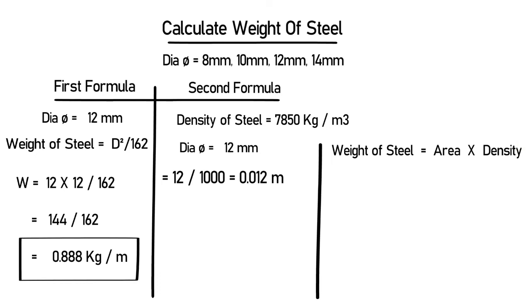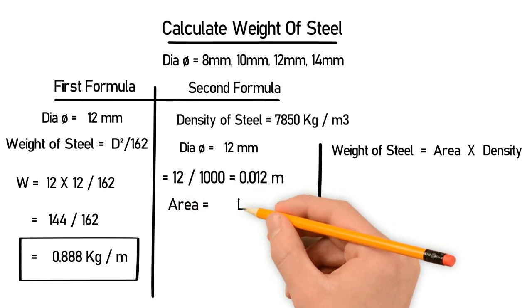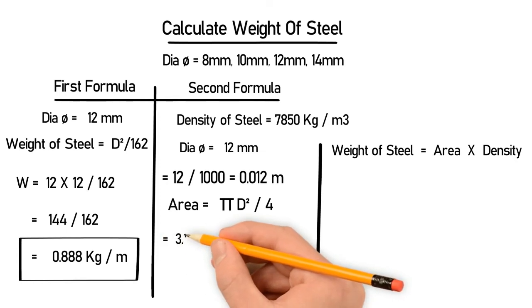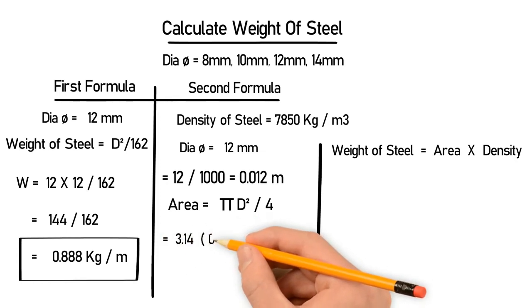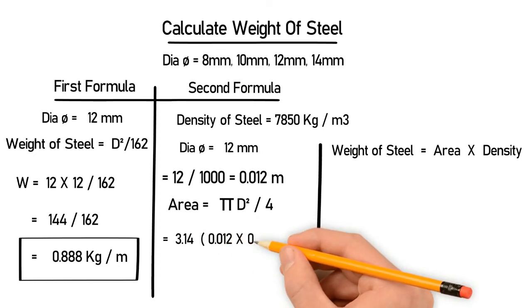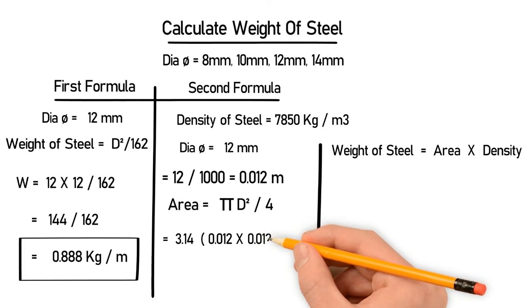To find this, we have to know the area first. Area equals π D² / 4. Let's put the values into the formula: 3.14 × 0.0012 × 0.0012 / 4.